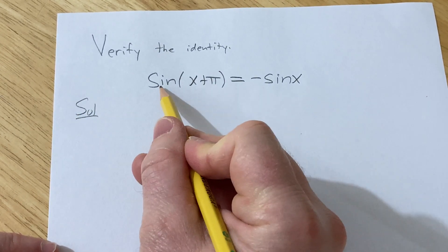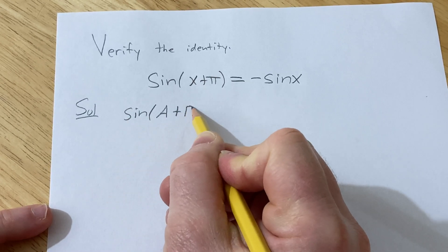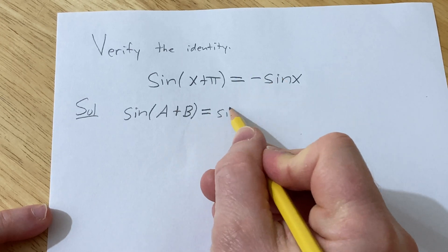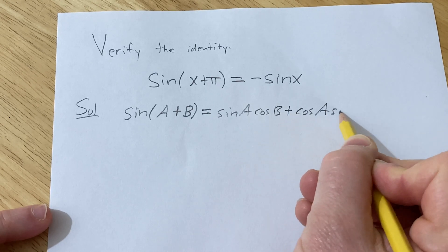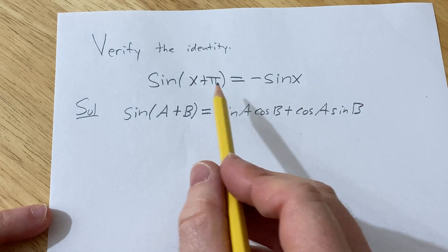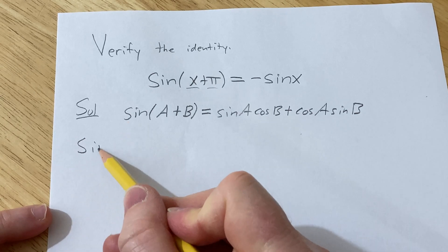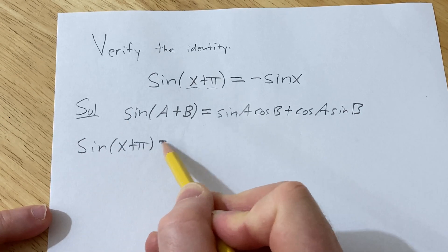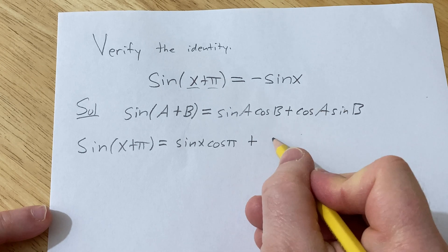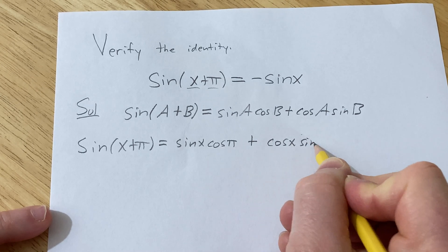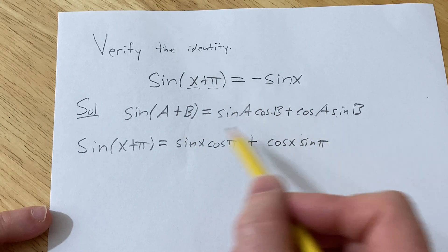So we're going to use an identity for the sine of a plus b: sine a cosine b plus cosine a sine b. In this case our a is x and our b is pi. So we have sine of x plus pi, which expands to sine x cosine pi plus cosine x sine pi.